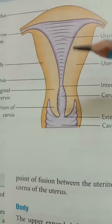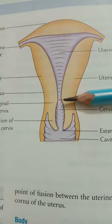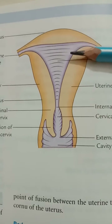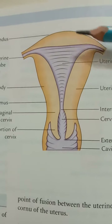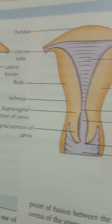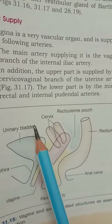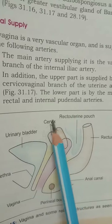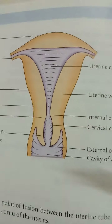The anterior surface is flat, directed downwards and forwards, and is covered by peritoneum up to the isthmus, where it is reflected onto the upper surface of the urinary bladder, forming the uterovesical pouch. In the diagram, the uterus and urinary bladder are visible, and between them the fold of peritoneum — the uterovesical pouch — is present.